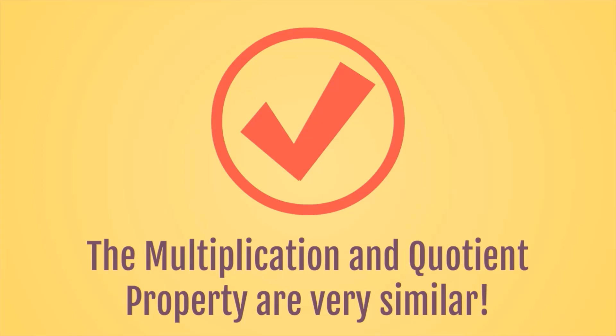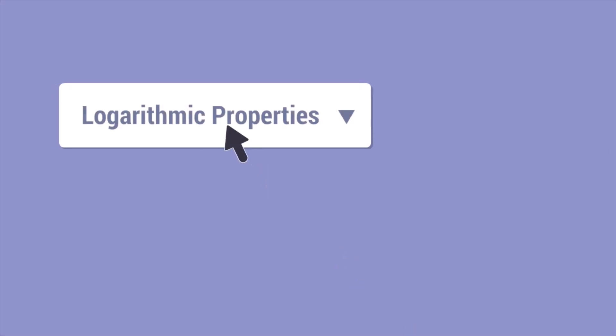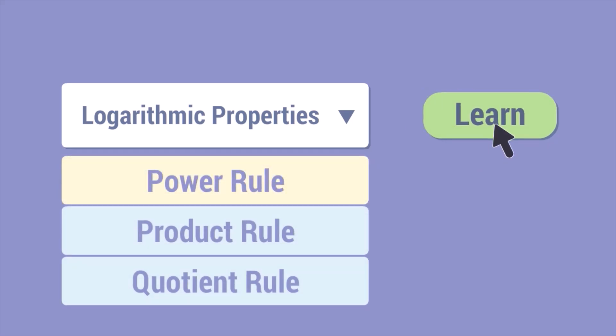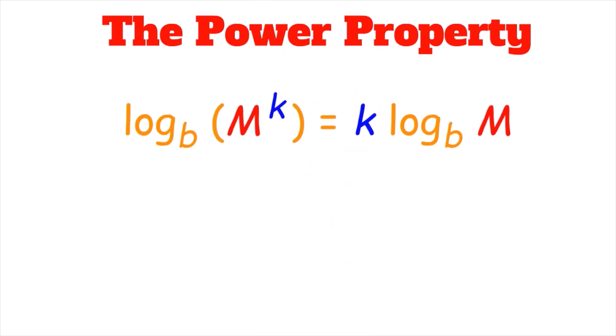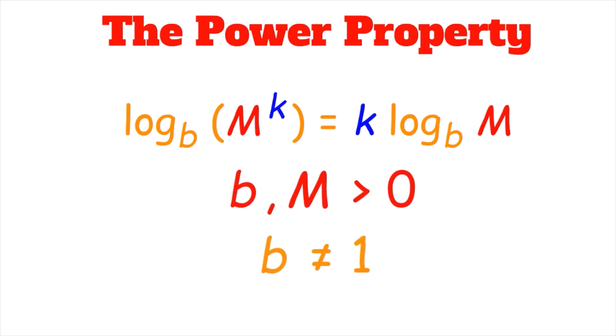The multiplication and quotient properties are very similar, and in reality the quotient property can be proved from the multiplication property. Let us now look at our third logarithmic property: the power rule. The power property states that log base B of M to the power of K is equal to K times log base B of M. We have the same domain restrictions: B and M must be greater than 0 and B cannot equal 1. Notice that K can be any real value.